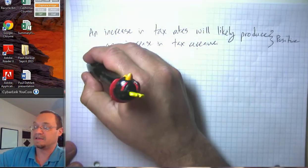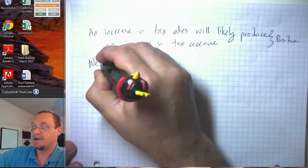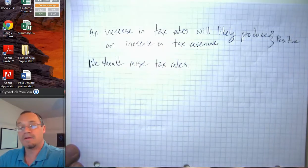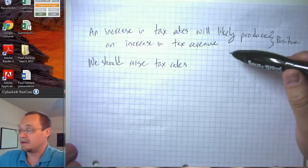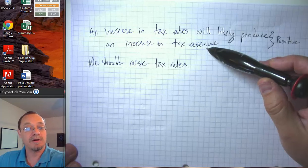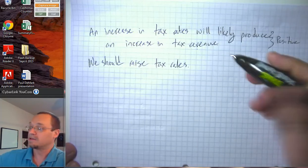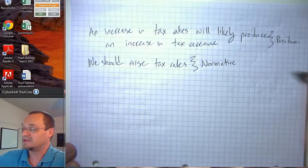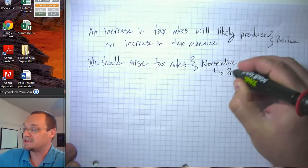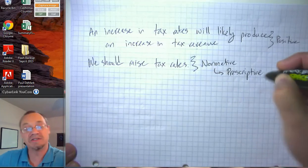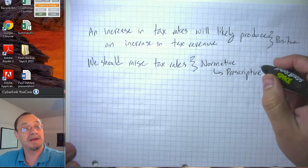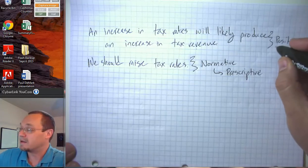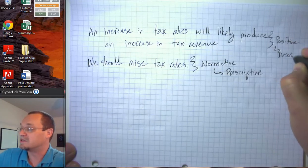On the other hand, if we said we should raise tax rates, then we're drawing a conclusion that the consequences are desirable or that this is an ethically permissible action. So this is a normative statement. Normative statements are also known as prescriptive statements because they're like a prescription. Positive statements are sometimes known as descriptive statements.